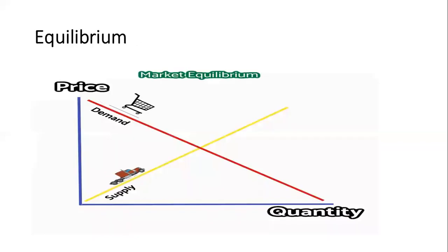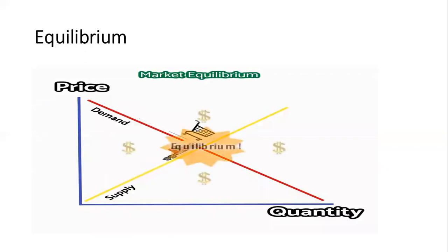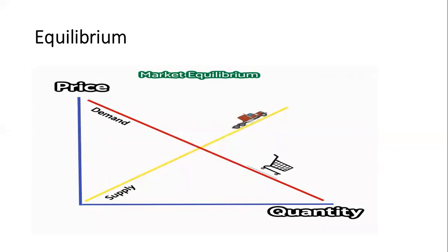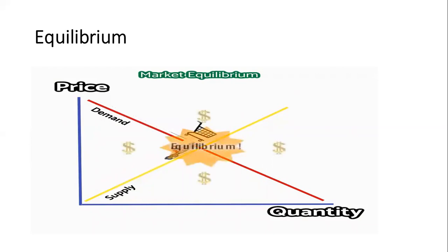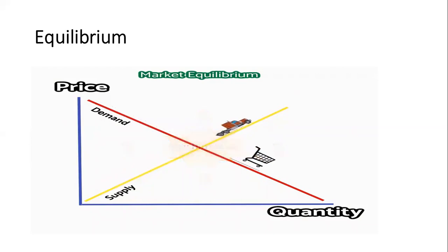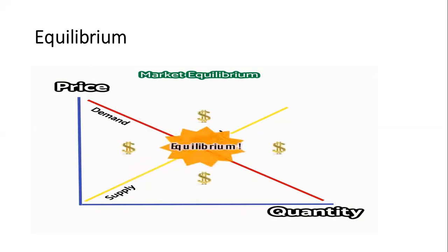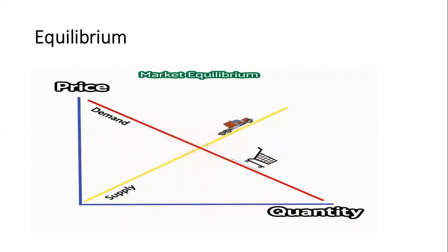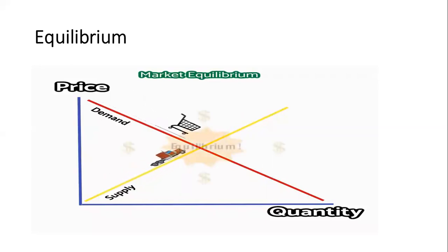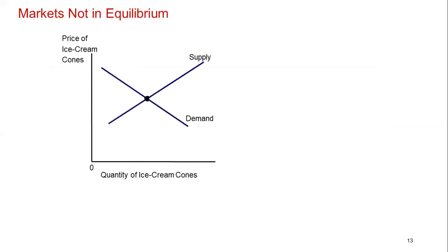Now let's put demand and supply together. The person who is willing and able to buy meets the seller in the market. The point of intersection — as you see here — represents the equilibrium, where the producer and buyers interact. The equilibrium price is where the number of units demanded equals the number of units supplied.